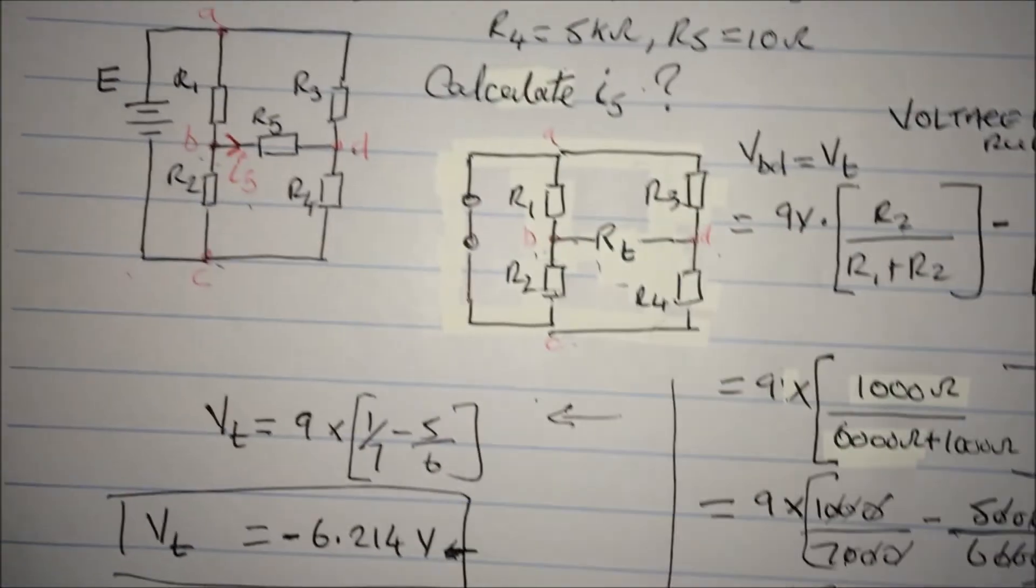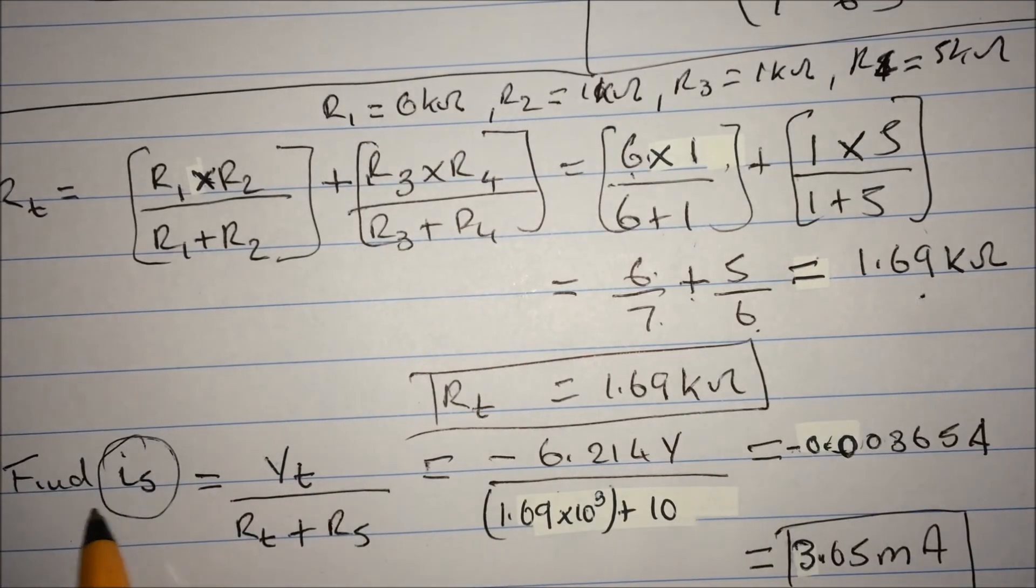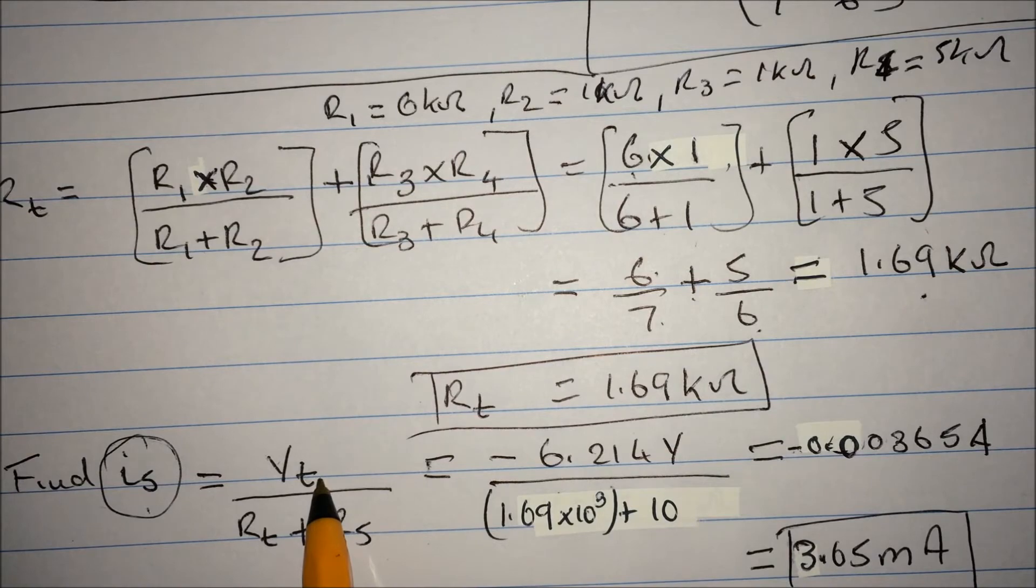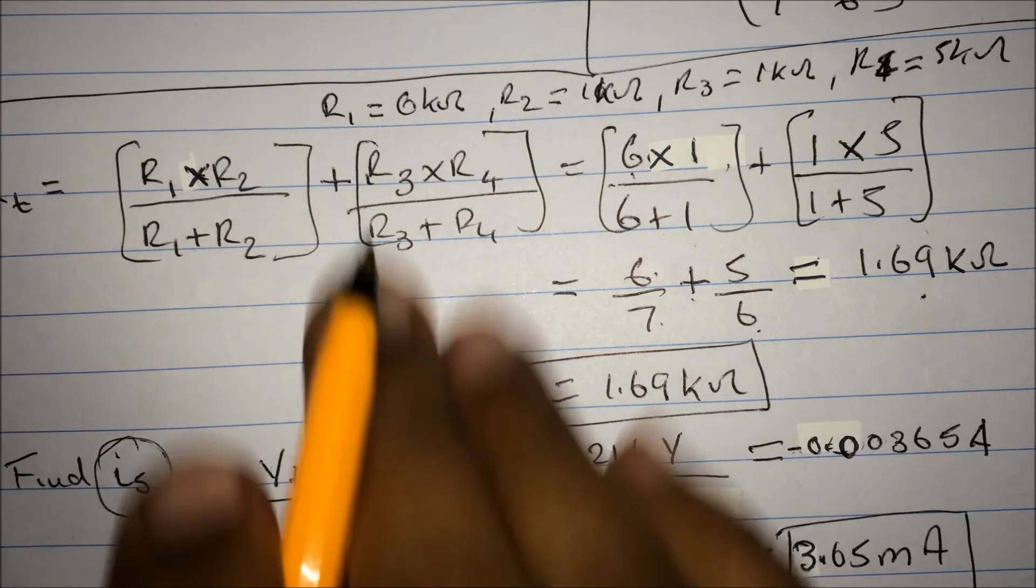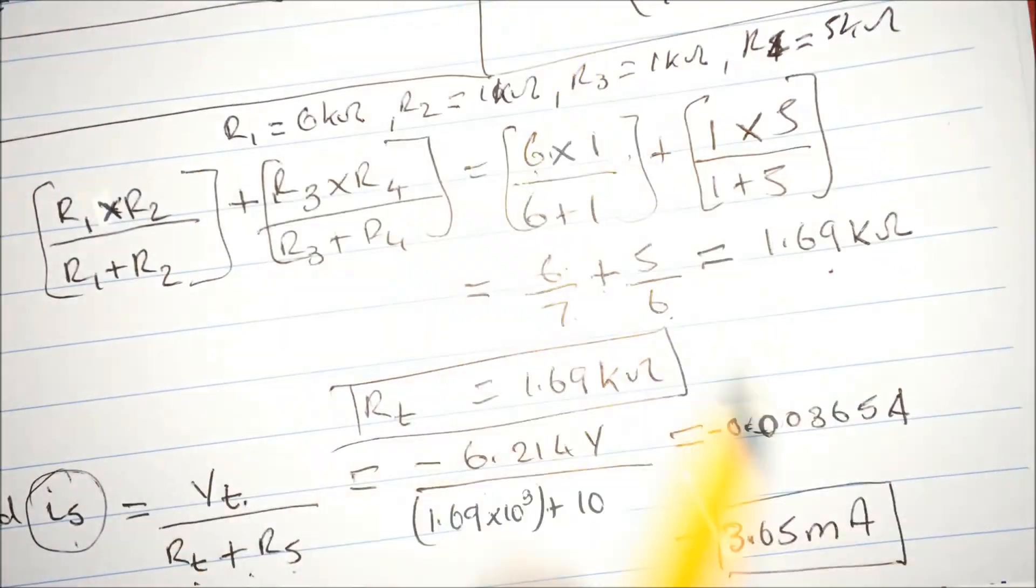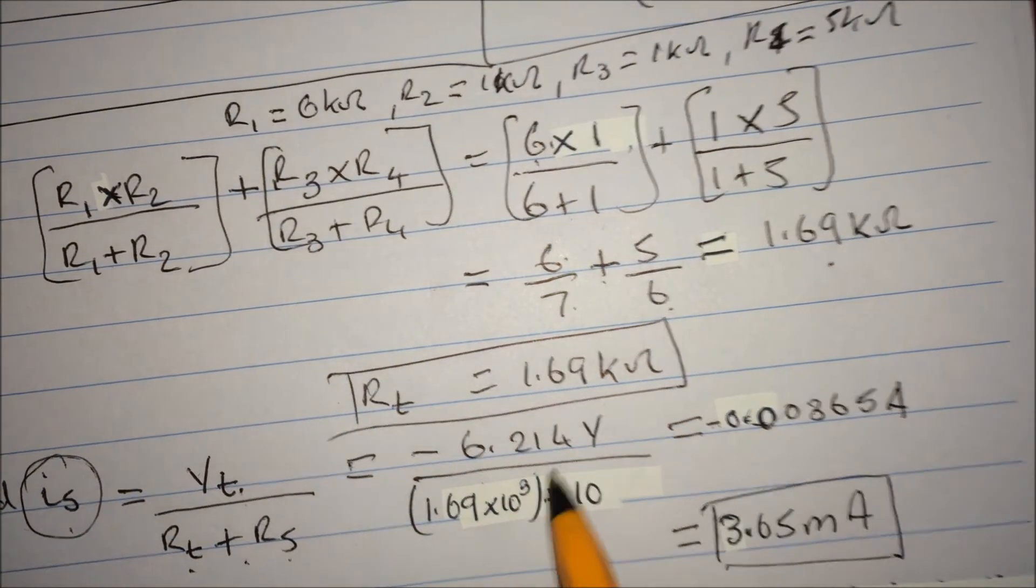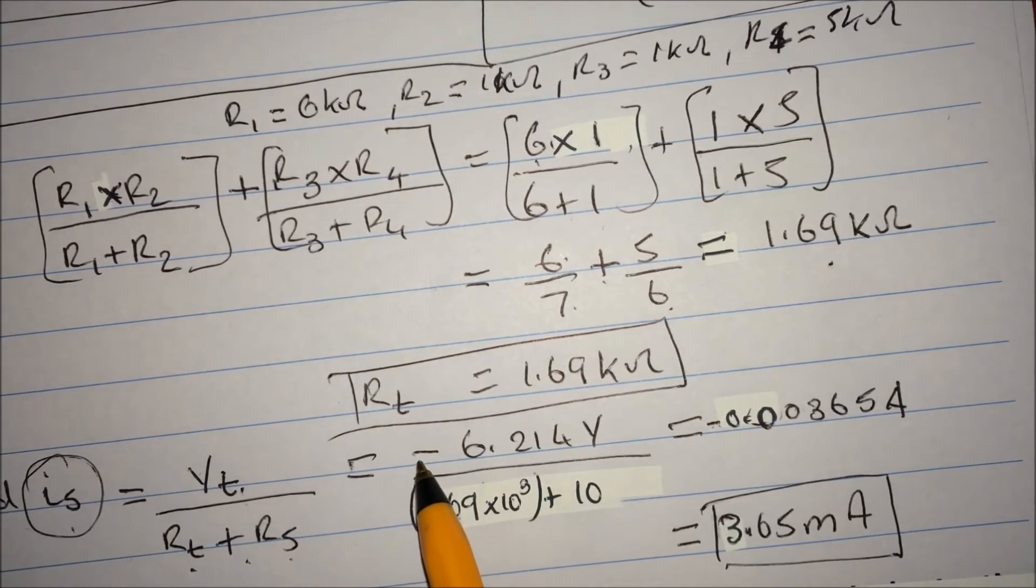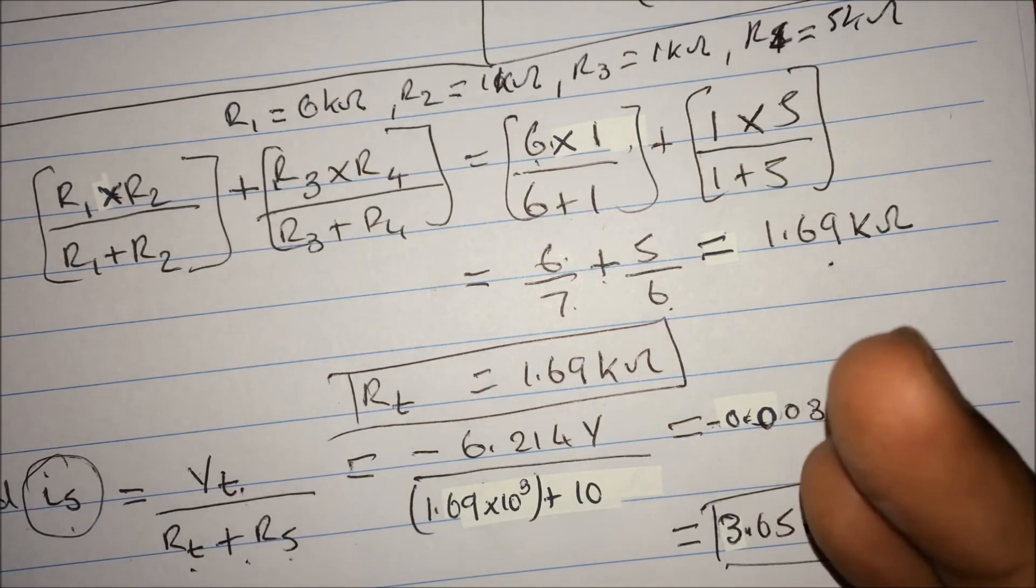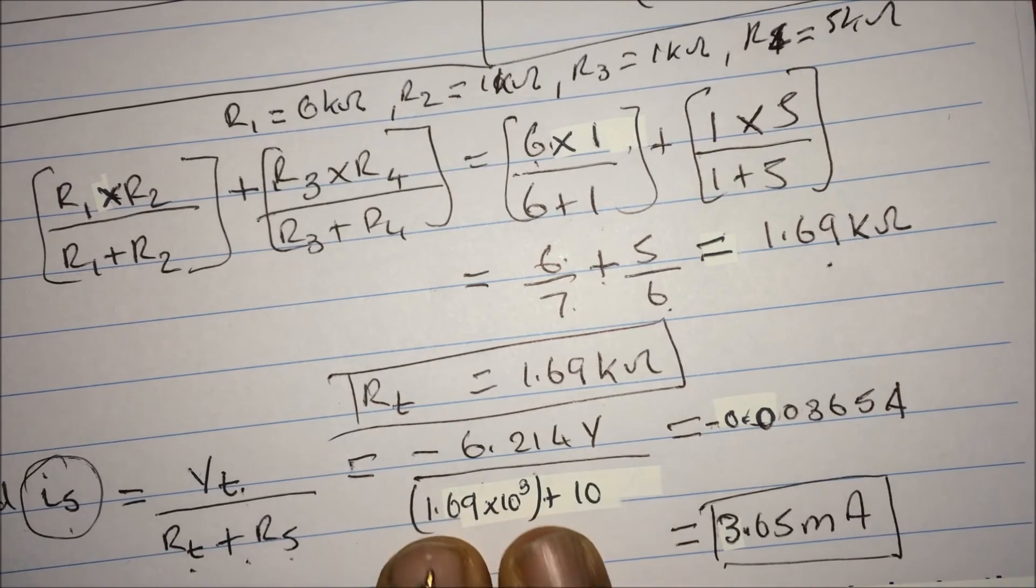So actually make sure, say equal there, and a bit of rewrite there for you guys again. So the I5, which was at the start of the question, I told you that current there. So when I look at R5, which was they want us to find the current, of course you say VT which is V Thevenin over R Thevenin plus R5. And remember R5 was 10 ohms. And what I did, just make sure write it, so we find V Thevenin which was minus 6.214 volt.